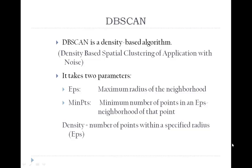It takes two parameters: epsilon and min points. Epsilon is the maximum radius of the neighborhood, whereas min points is the minimum number of points in an epsilon neighborhood of that point.